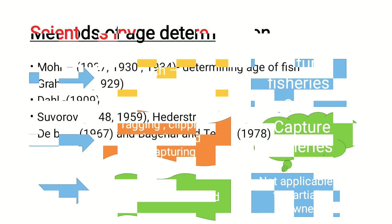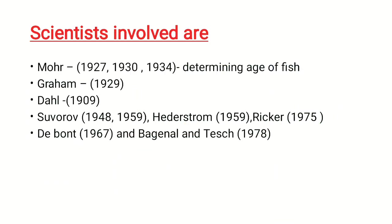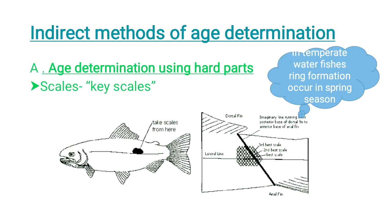Key scientists involved in age determination include More (1927, 1930, and 1934), Graham (1929), Dal (1909), Suvarov, Headerstrom, Ricker, D'Bond, Beginnel, and Tesch. These scientist names sometimes appear in exams regarding who contributed to the determination of fish age.